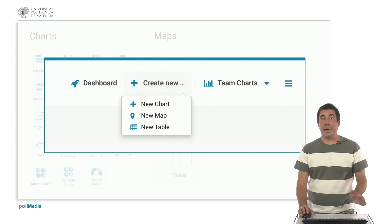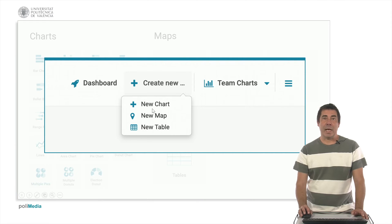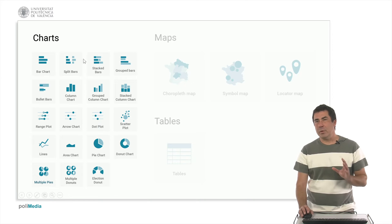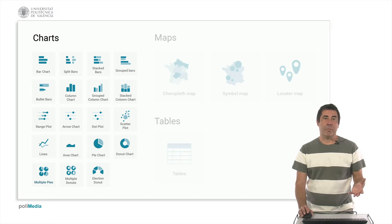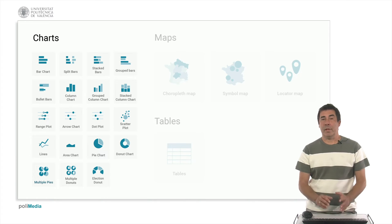Whether we are creating a chart, a map, or a table, when we are in the dashboard we will choose the option 'create new' and select the type we are going to use. Once we have this, we will have a representation of options, and according to the data we want to represent and what type of representation we think is better, we will choose one of them.